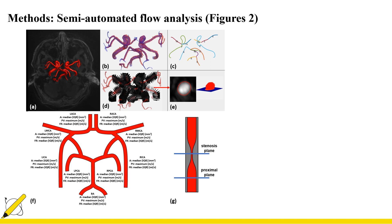The steps include segmentation of vasculature as shown in panel A, extraction of centerlines for all arterial branches as shown in panel C, and placement of multiple analysis planes per branch perpendicular to the centerlines as shown in panel D. At each plane, vessel lumen was segmented automatically as shown in panel E, and hemodynamic parameters such as flow rate and peak velocity were calculated. A summary report of these parameters was generated at the end of the process as shown in panel F.